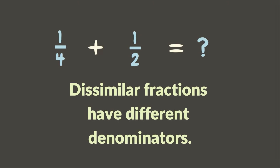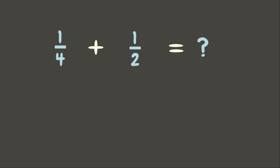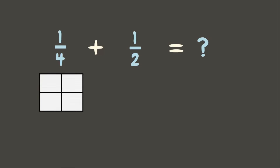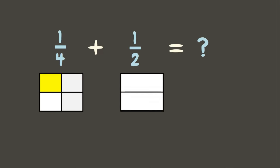Let us draw first some representations. One-fourth can be represented as a whole divided into four equal parts where one part is taken. While one-half can be represented as a whole divided into two equal parts where one part is taken. Now let us add these two representations. To add these representations, we need to divide each square into the same number of equal parts.